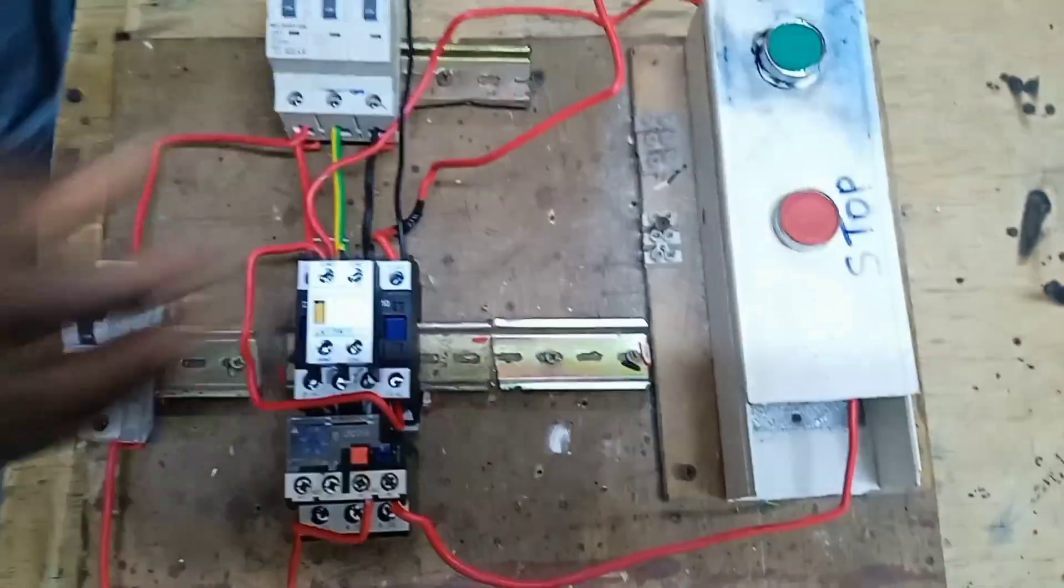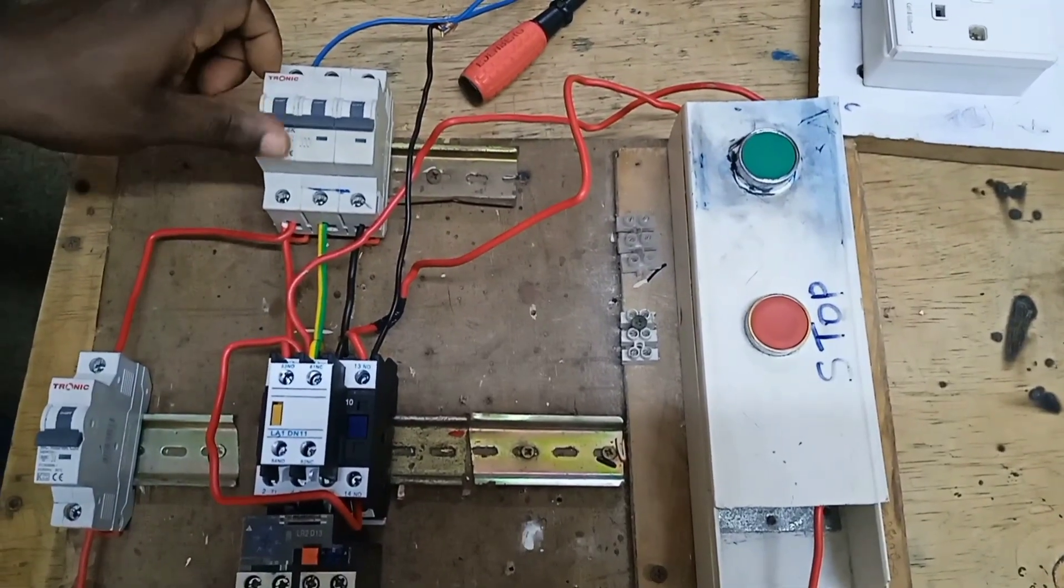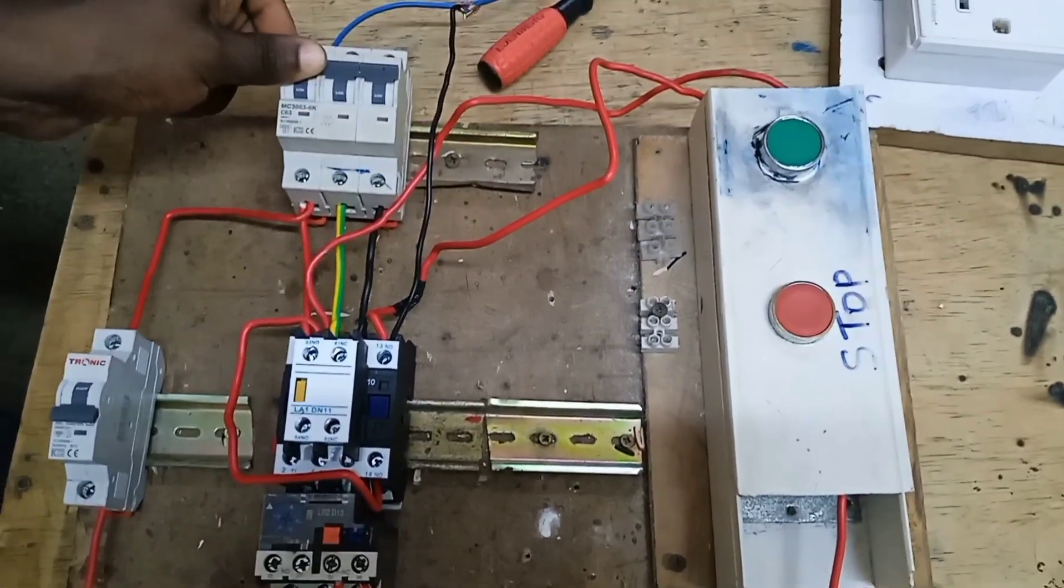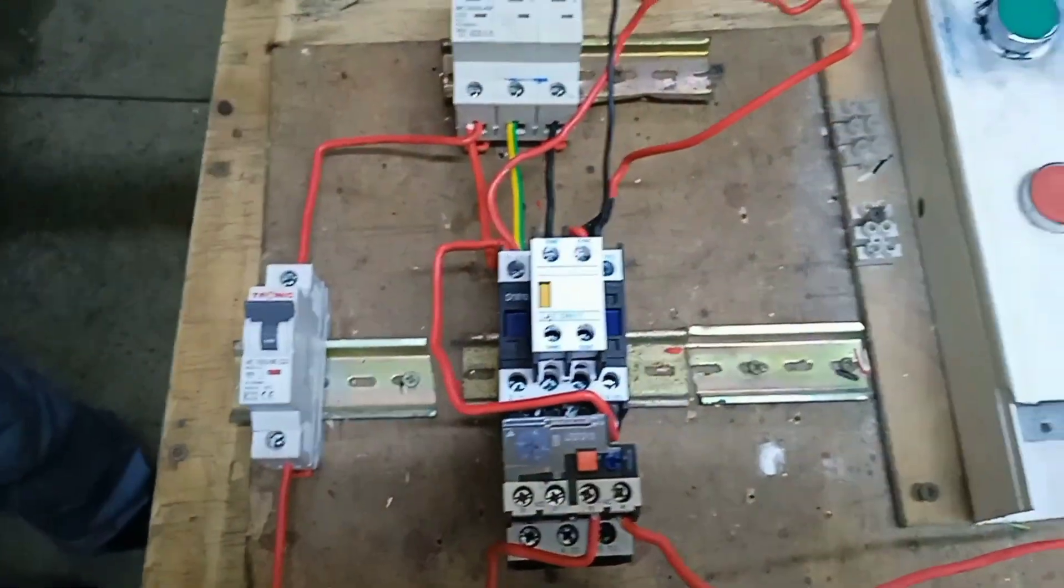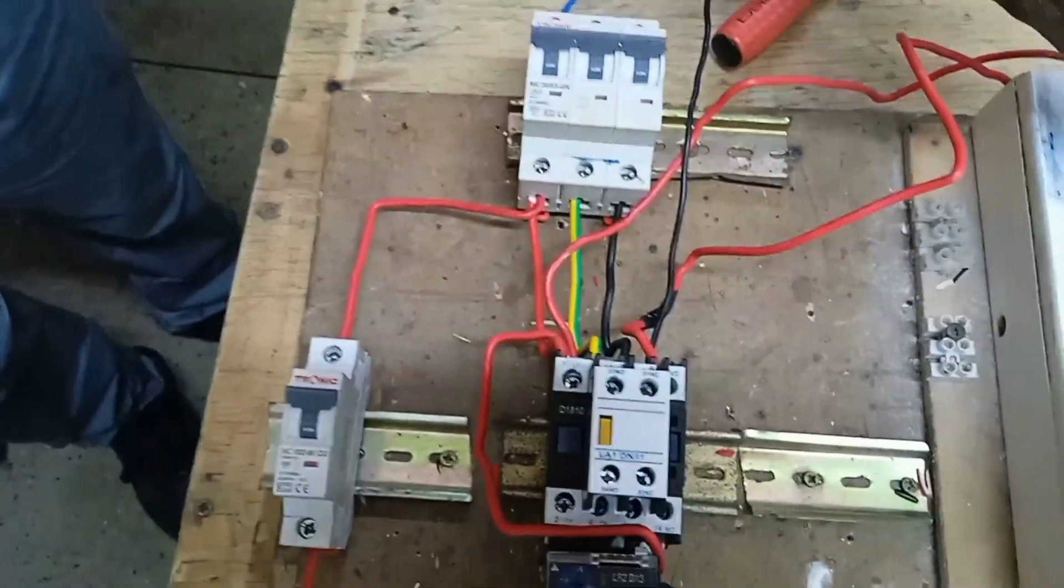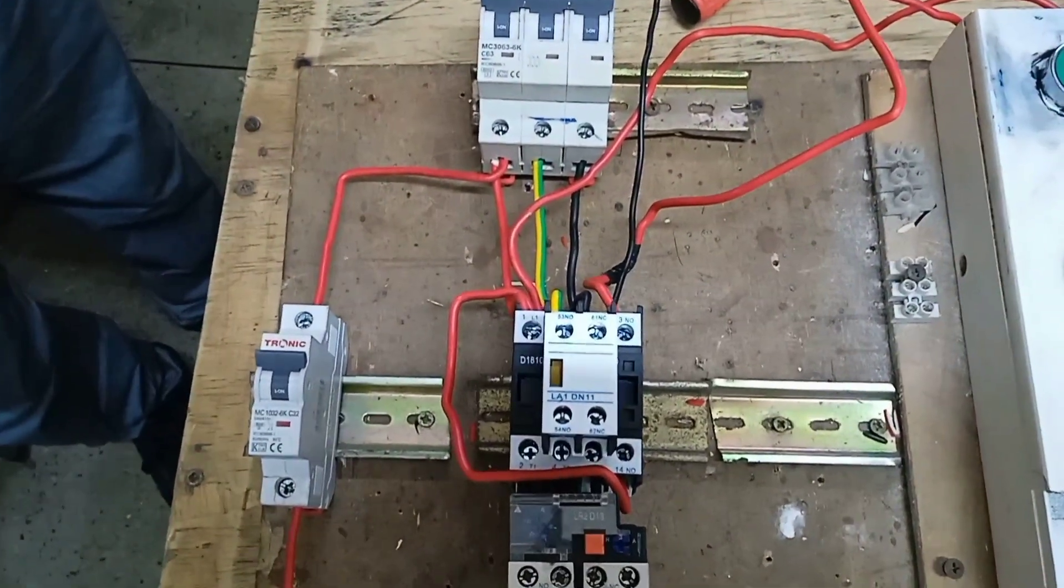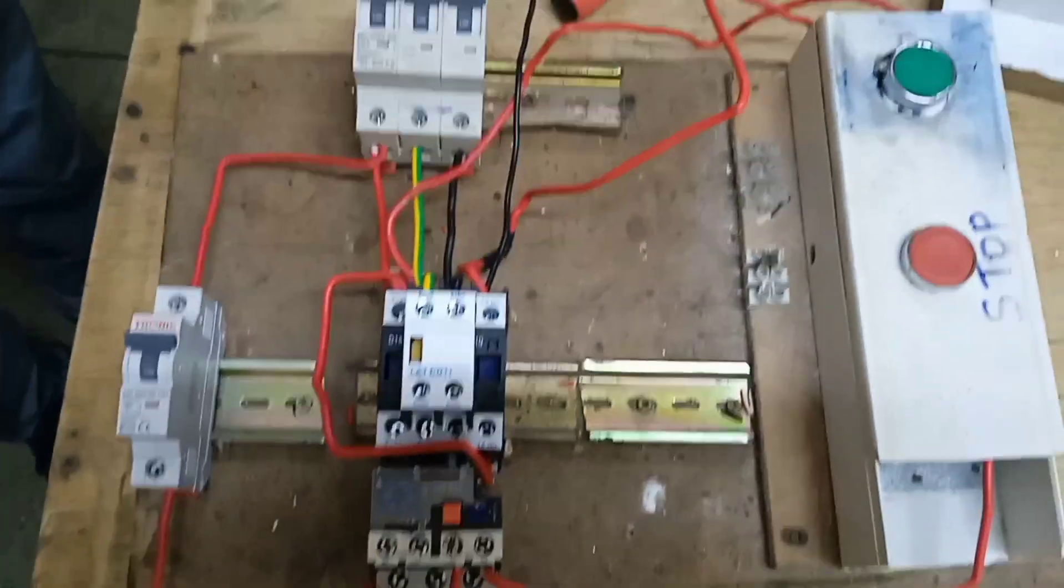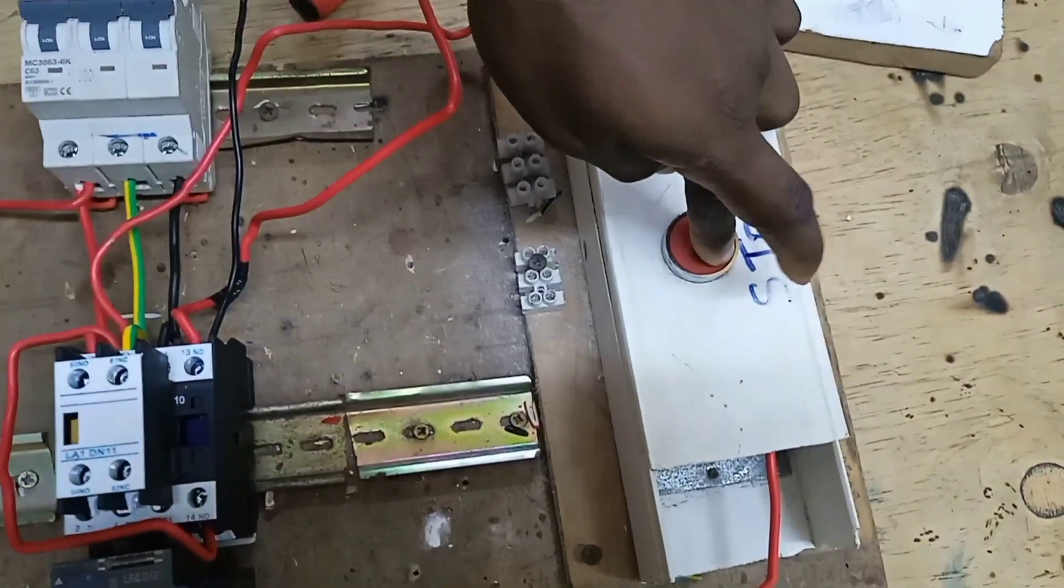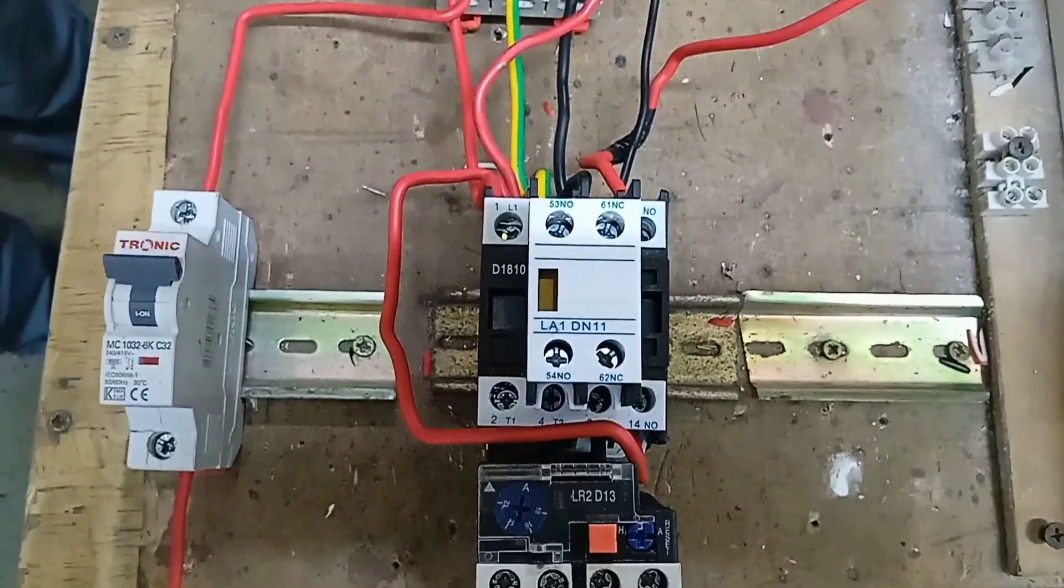Now we can test our circuit. We are going to switch on our power circuit, then switch on our control circuit, and then we test. You can see our contactor is now energized. Power is flowing to the three-phase induction motor. If we stop, if we start, the contactor responds.